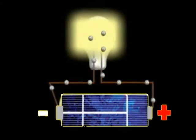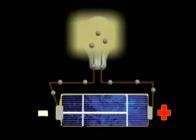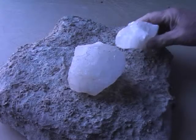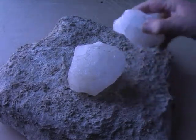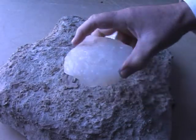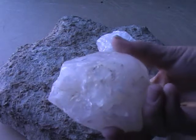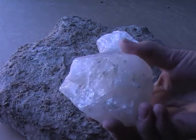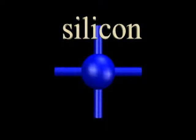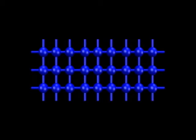Solar cell manufacturers use silicon crystals to create solar cells. Silicon is a very common element. If you have ever found a piece of quartz, you have found a crystal created from silicon and oxygen. A silicon atom has four valence electrons. This simplified model shows a silicon crystal structure, with each silicon atom connected to four others.